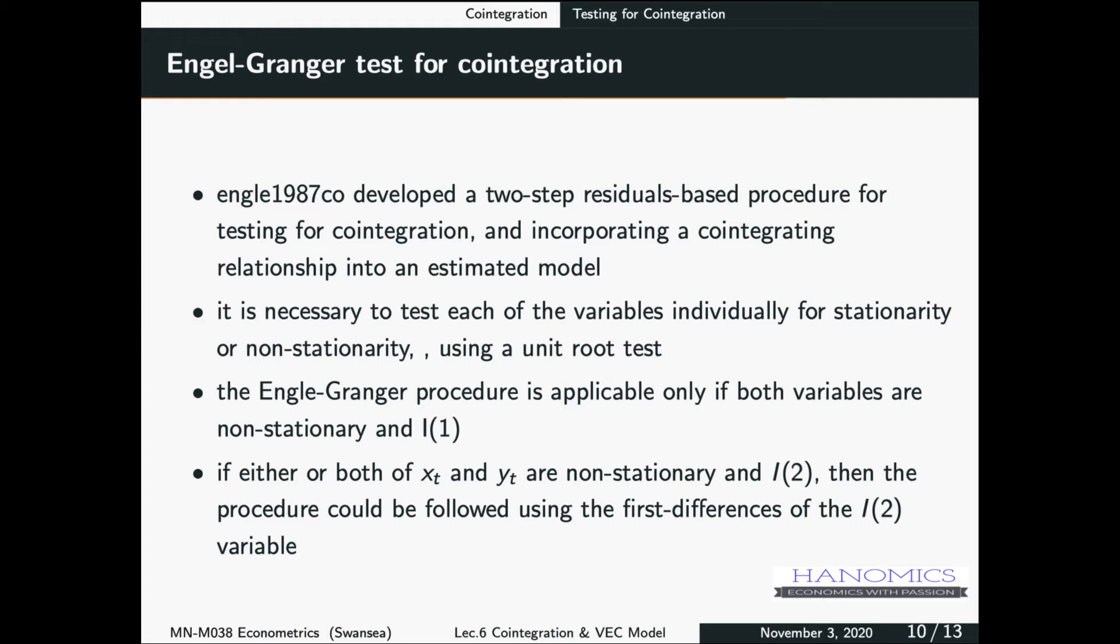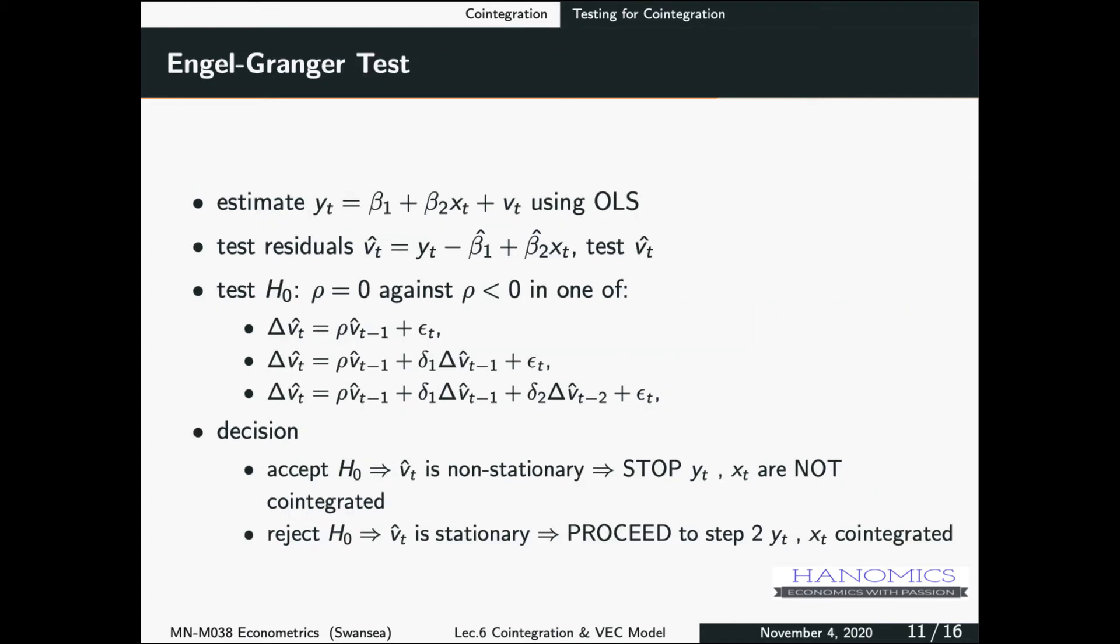So it is necessary for this test, it is necessary that individual, you're still going to run a unit root test, you're going to do a unit root test for individual series, and these should be non-stationary. So you want to see whether they are stationary or not, but in the case of Engel-Granger procedure, it's applicable only if both variables are non-stationary and from the same order I1. So if they were I2, then you will have to difference them to make them I1 before doing this test.